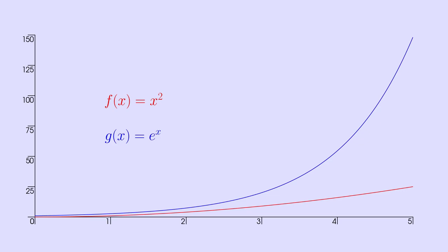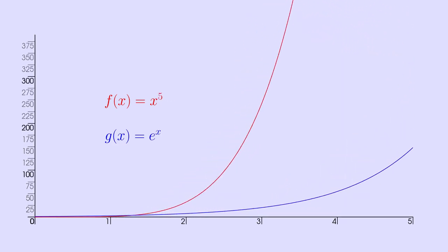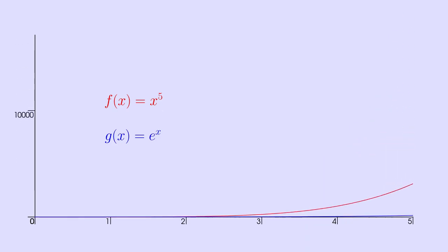What about something like x to the fifth? In this case, x to the fifth starts out greater, but e to the x passes it in about 13 time units.